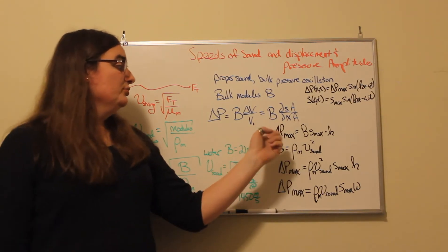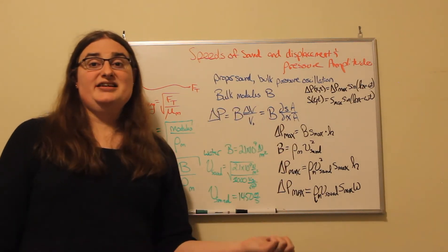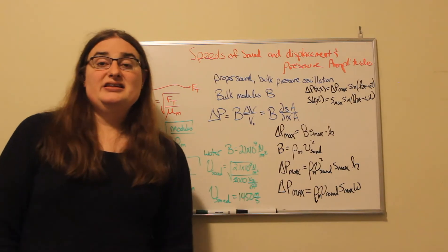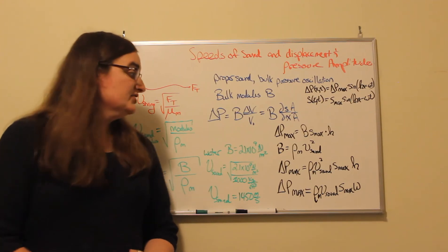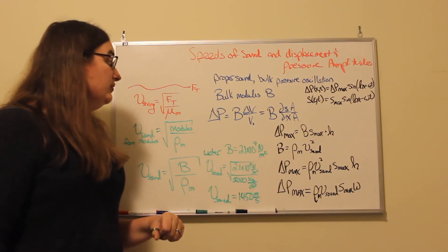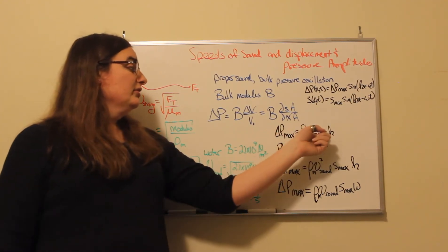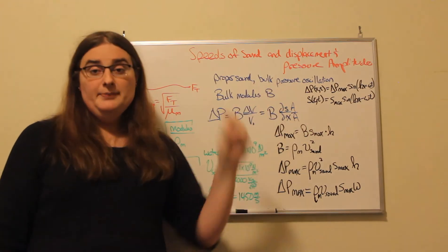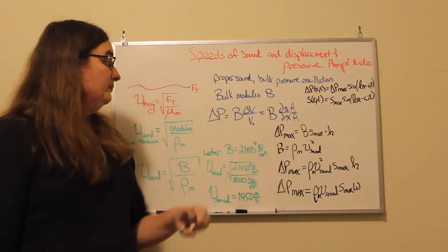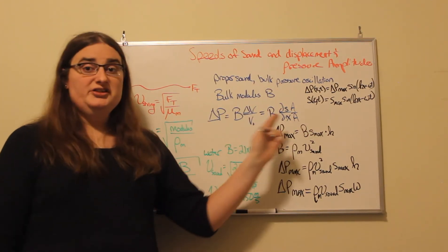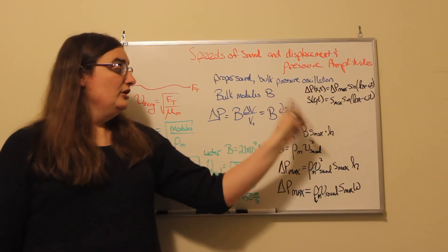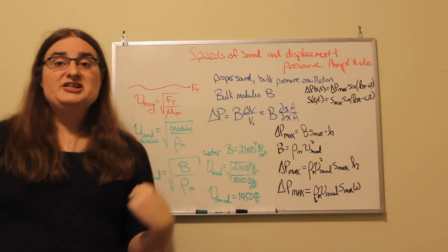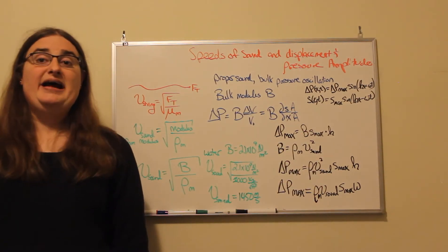Now there is an issue with the phase between the pressure oscillation and this displacement piece. That's a story for a different class. So what we want to look at, though, is how can we relate those two amplitudes? Well, my maximum pressure would be my bulk modulus times the amplitude of this derivative. So that would be my maximum displacement s max times my angular wave number k.